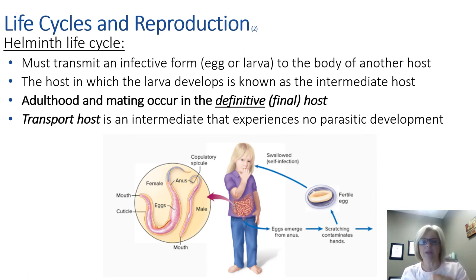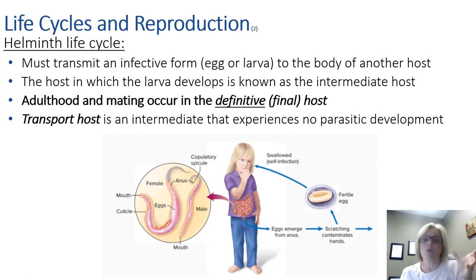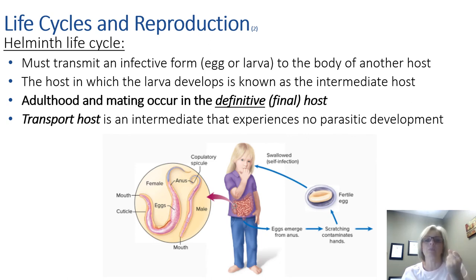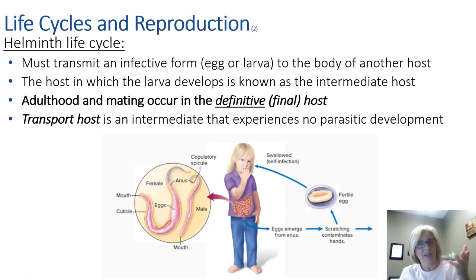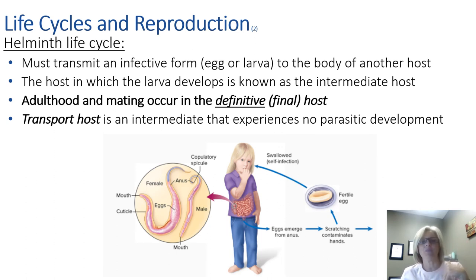Enterobius vermicularis, the pinworm, very commonly affects human beings, especially small children, because young children are not careful about hygiene — they may scratch their anus and put their hand in their mouth or someone else's. The route of infection is oral intake and occasionally penetration of tissues. The life cycle starts when a person picks up the eggs from their hands — maybe scratching or handling a dog. The eggs hatch in the intestines, release larvae that mature into adults after a month, then male and female worms mate, and the female leaves the anus to deposit eggs. This causes itchiness, leading to scratching and spreading the eggs further. The resulting infection is enterobiasis, isolated basically to the intestines.